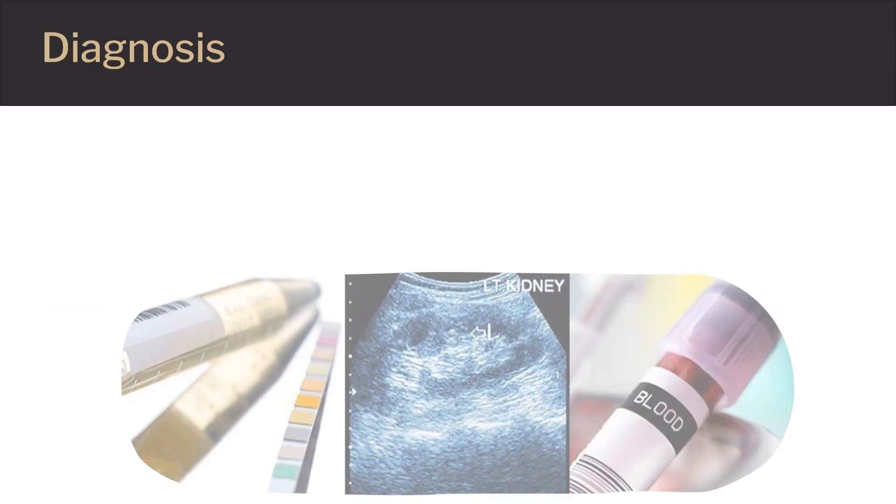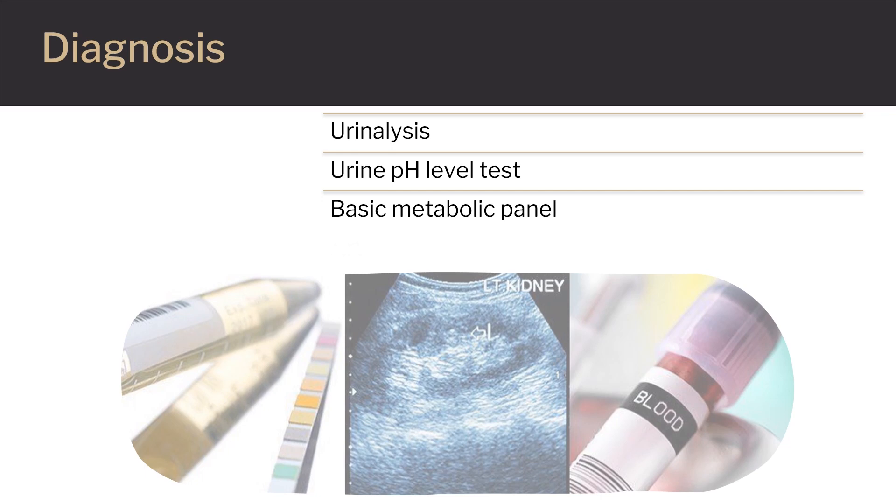The symptoms of alkalosis mimic symptoms of some other conditions. The first step in diagnosing alkalosis is a physical exam. Your doctor will evaluate your symptoms before moving on to any invasive tests. If there are any urgent symptoms, such as hyperventilation, your doctor will treat those first before any complications arise. Common tests for this include urinalysis, urine pH level tests, basic metabolic panels, and arterial blood gas analysis.